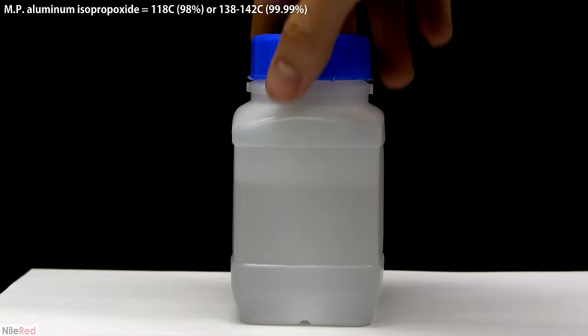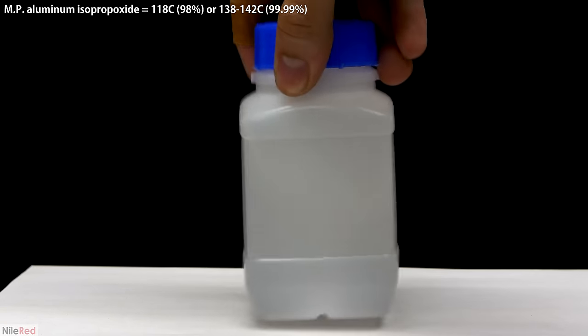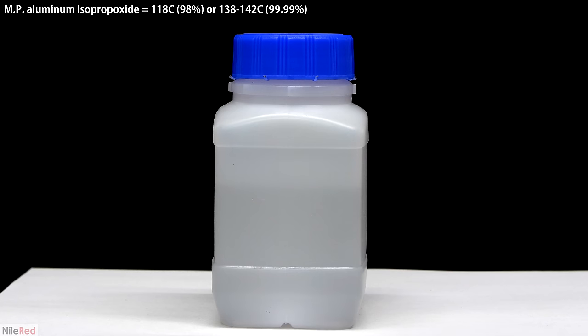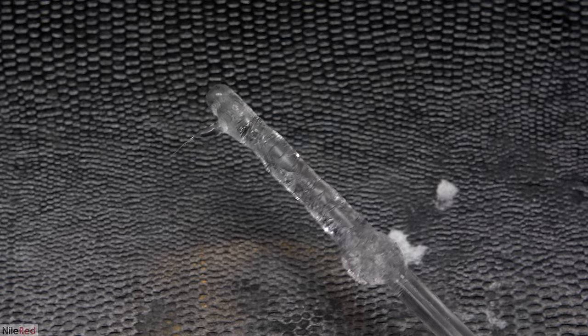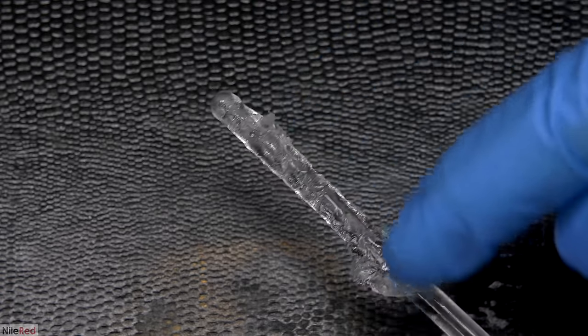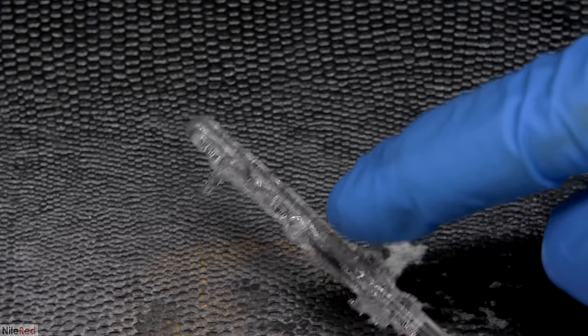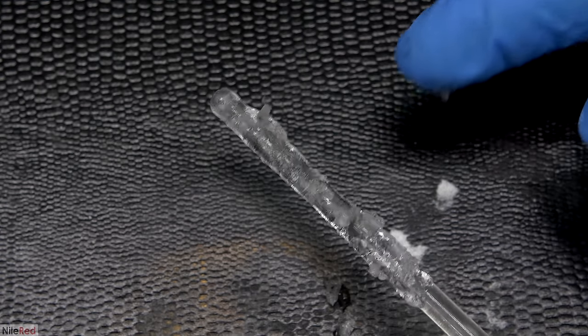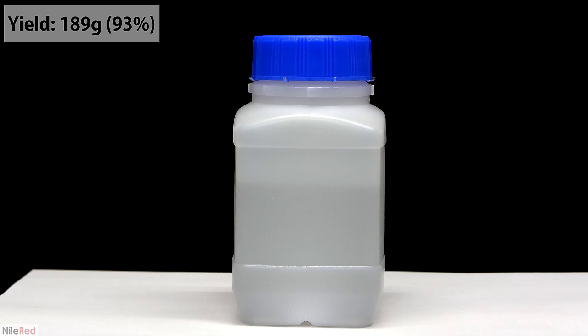Aluminum isopropoxide has a big tendency to supercool. So even though it's cooled down to room temperature, which is below its freezing point, we still have a liquid instead of a solid. When I dip a stir rod into the liquid and pull it out, the aluminum isopropoxide immediately starts to solidify. It still has a little trouble, so it doesn't become completely solid but instead becomes more of a gel. The final yield was about 189 grams, which corresponds to a percent yield of 93%.